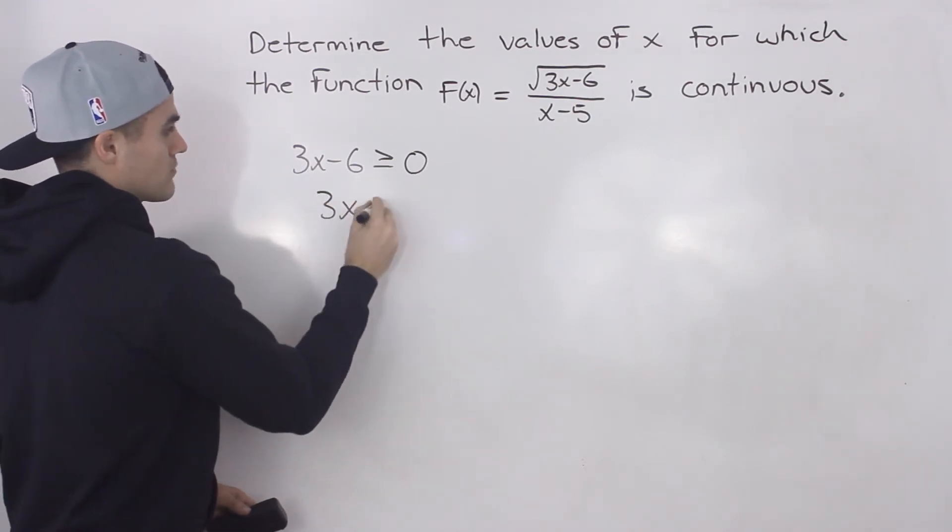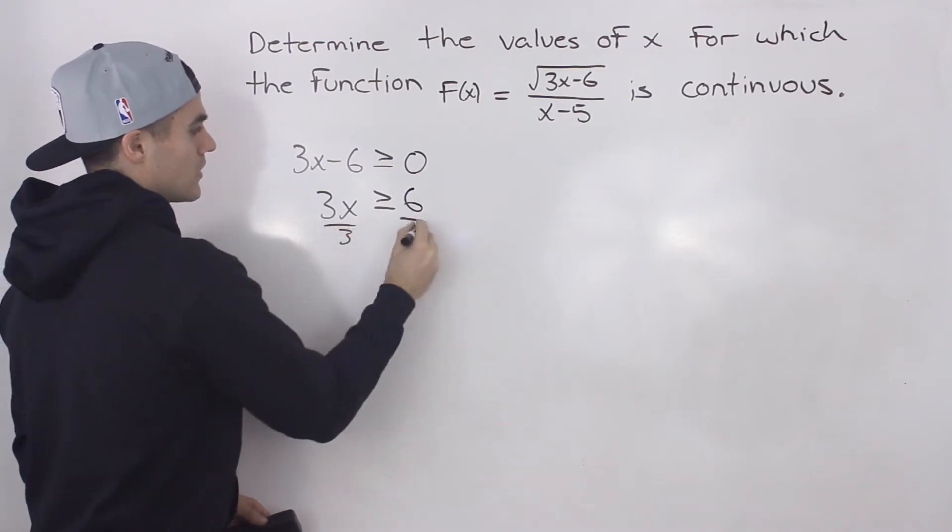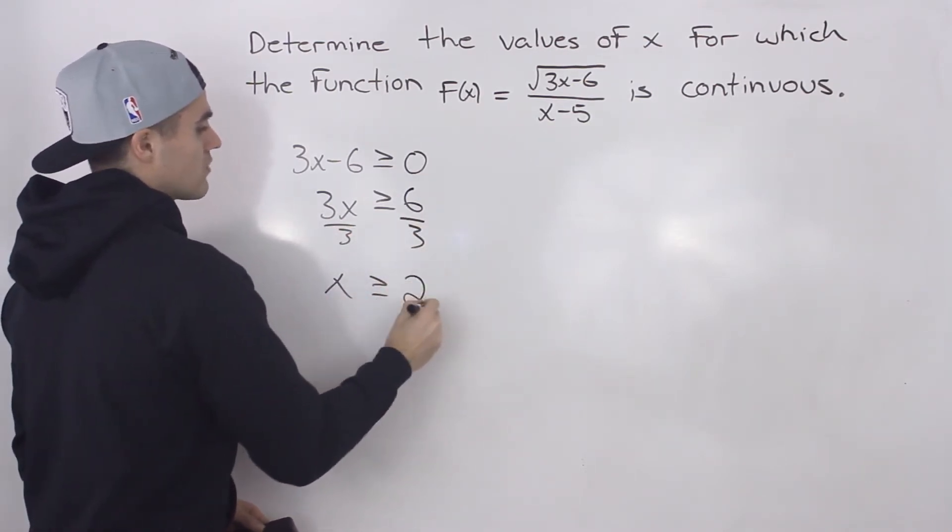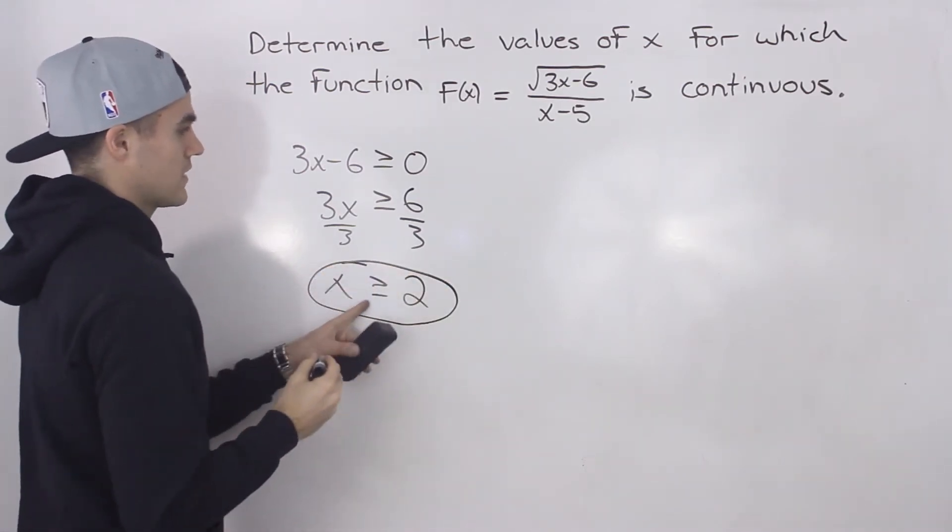Well, that's going to happen when 3x is greater than or equal to six. And if we divide both sides by three, it's going to happen when x is greater than or equal to two. So that's part of it.